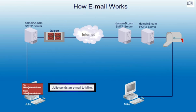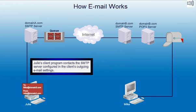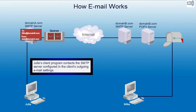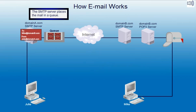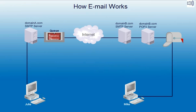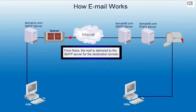Julie sends an email to Mike. Julie's client program contacts the SMTP server configured in the client's outgoing email settings. The SMTP server places the mail in a queue. From there, the mail is delivered to the SMTP server for the destination domain.